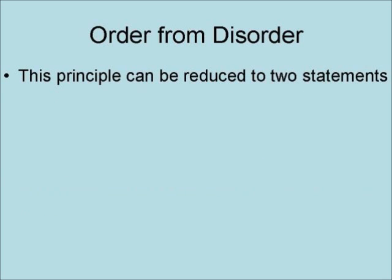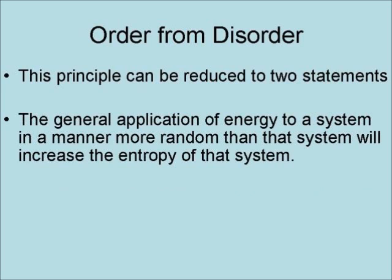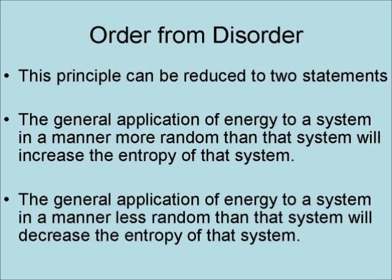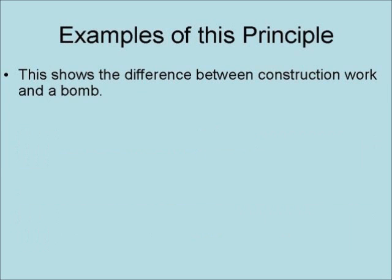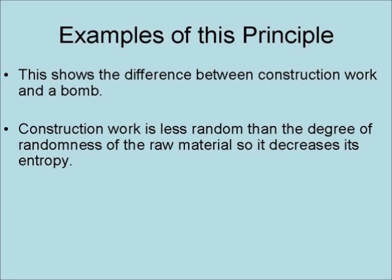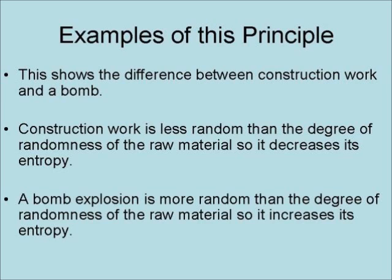This principle can be reduced to two statements: the general application of energy to a system in a manner more random than the system will increase the entropy of that system, and the general application of energy in a manner less random than the system will decrease the entropy of that system. As an example, this shows the difference between construction work and a bomb — construction work is less random than the degree of randomness of the raw material, so it decreases entropy, while a bomb explosion is more random than the raw material, so it increases entropy.